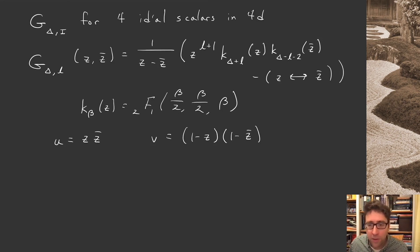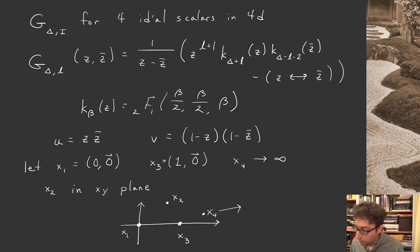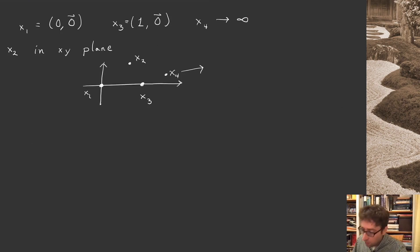So in closing, what I'd like to do is explain to you what the z, z bar coordinate system is a little bit more geometrically to give you more intuition for what frame these conformal blocks are written in. What we can do is we can let x1 sit at the origin. We can let x3 sit at a 1 on, say, the x-axis, and everything else is 0. We'll send x4 off to infinity. And then by rotational invariance, we'll arrange for x2 to be in the xy plane. So the setup is something like this. Here's x1, x4 we're sending off to infinity, here's x3, and x2 is sitting up here in the xy plane.